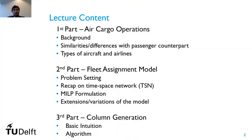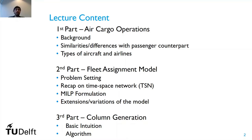The lecture is divided into three parts. In the first part we will cover air cargo operations from a general perspective — in terms of supply chain, stakeholders, main characteristics, and similarities and differences with their passenger counterpart. Then we dive more into operations research in the second part by describing a fleet assignment model where cargo requests and aircraft types can move simultaneously in a cargo network.